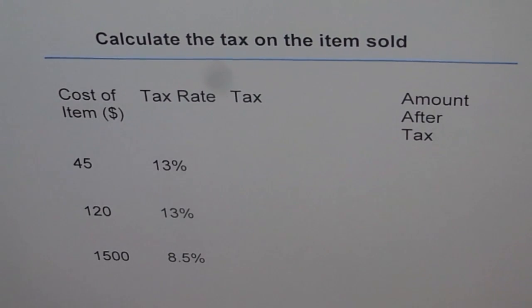Here is an application for percent. Calculate the tax on the item sold. Anytime you buy anything, there will be some tax applicable to it. Tax may depend on the items you buy and the place from where you buy. Provinces have different taxes. Here in Ontario, we have 13% tax on most of the items. So I have taken 13% in my examples.